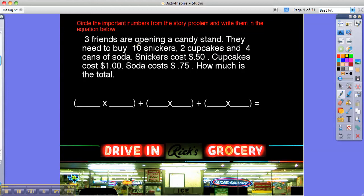So, three friends are opening a candy stand. They need to buy ten Snickers, two cupcakes, and four cans of soda. Snickers cost fifty cents, cupcakes cost a dollar, soda costs seventy-five cents. How much is the total?